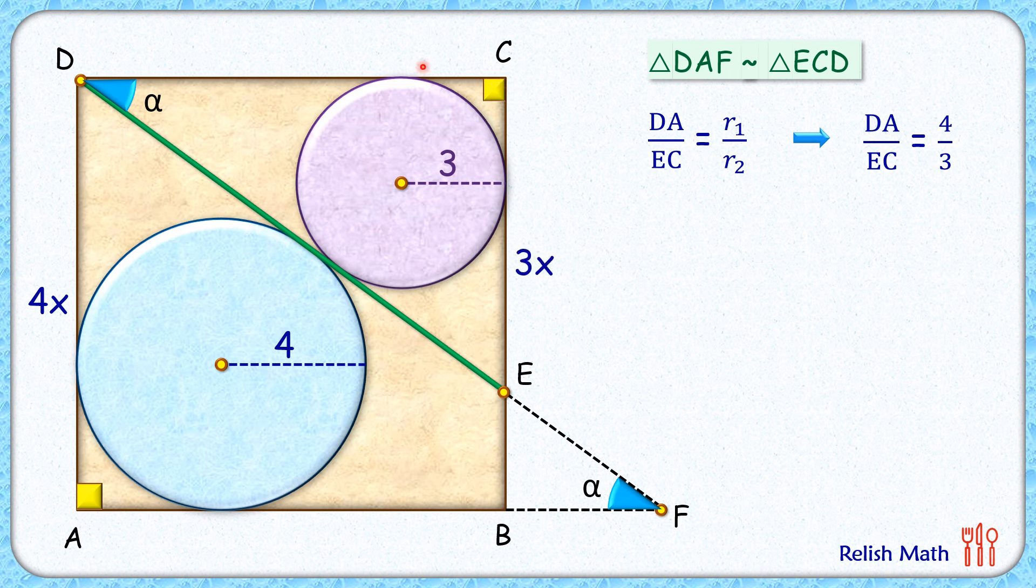How about DC? DC is the side of the square, so again it will be 4x. And if you look in triangle DCE, in this right angle triangle by Pythagoras theorem, DE length will be 5x.